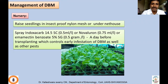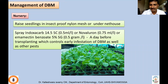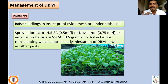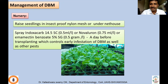Now we'll see the management of DBM. As mentioned, it receives the highest quantity of insecticides and has developed resistance to most insecticides with different modes of action. Scientists around the world are continually working on developing management strategies for this worst pest. Management should be initiated in the nursery itself — raise seedlings in insect-proof nylon mesh or under net houses so that colonization in the nursery itself can be avoided. Before transplanting, seedlings may be sprayed with Indoxacarb, Novaluron, Emamectin benzoate, or at the concentrations mentioned.